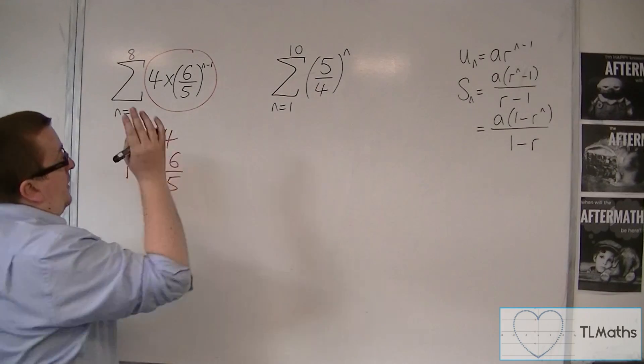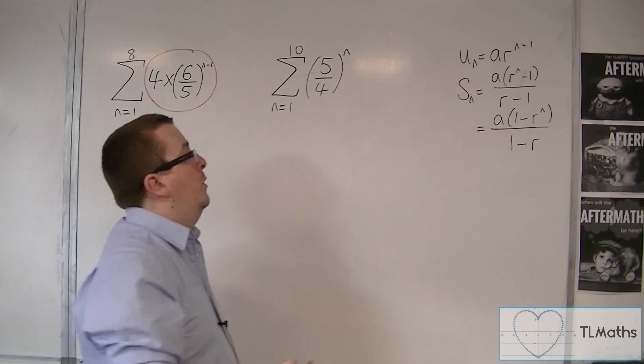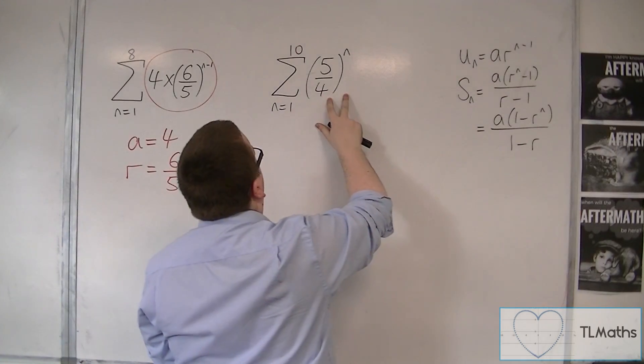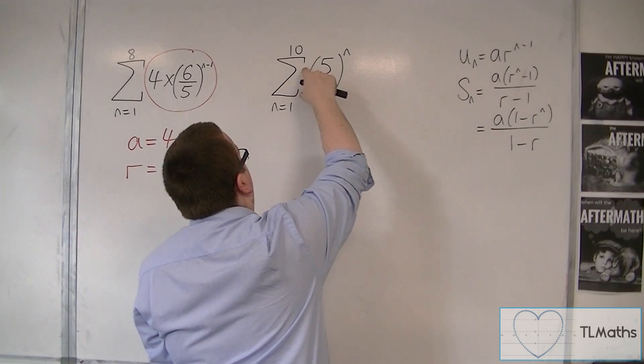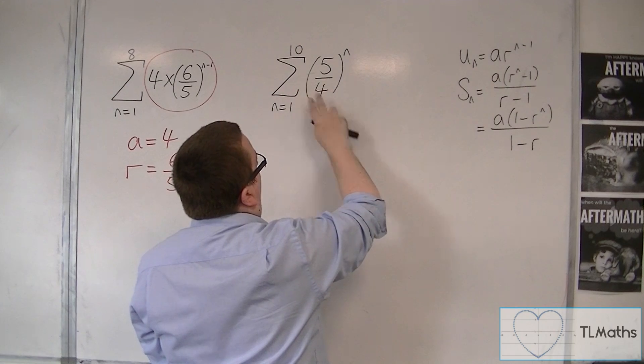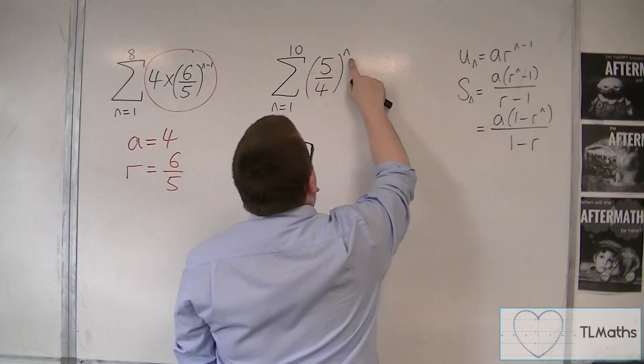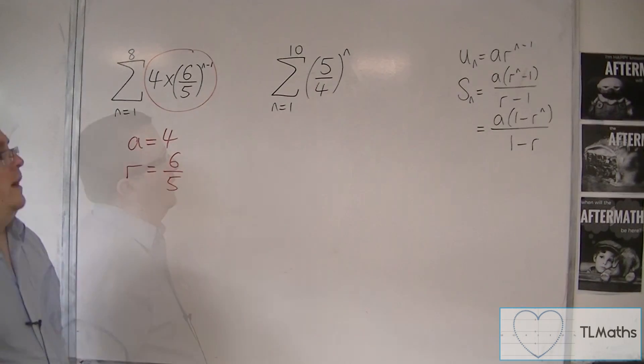So this is also geometric, but it's not in the form of a r to the n minus 1. Okay, where there's no number there identifying itself, but a could be 1, I guess. And r, that could be r, but this is to the power of n, not n minus 1.